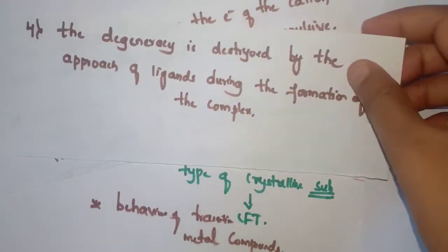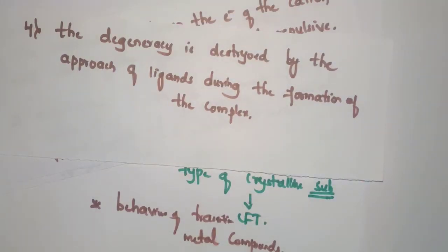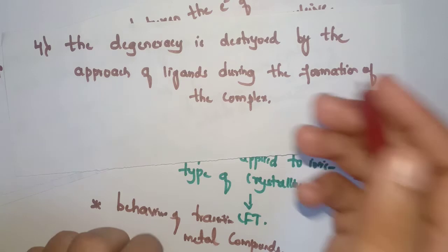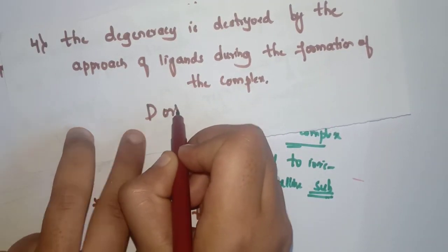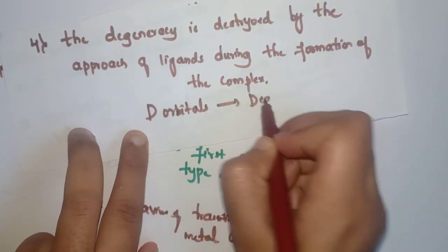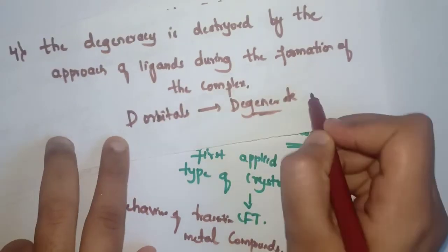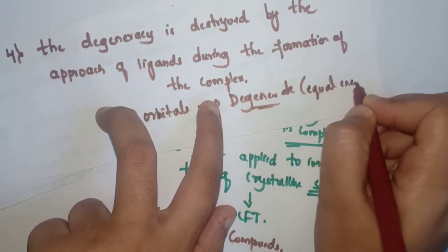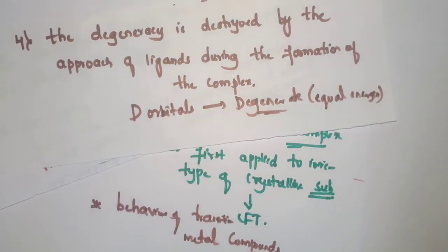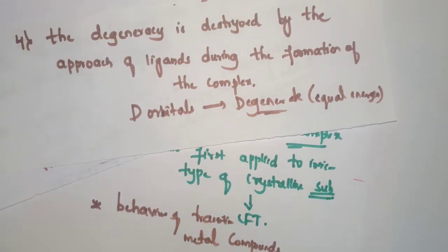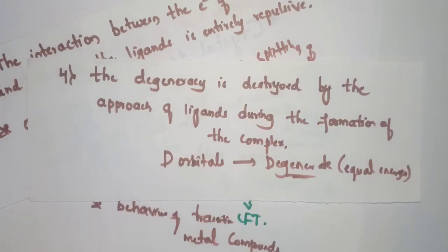The last and very important point is that degeneracy is destroyed by the approach of ligands during the formation of the complex. The d orbitals in a free metal ion are degenerate, meaning they have equal energies. But when ligands approach the metal ion during complex formation, this degeneracy is destroyed.